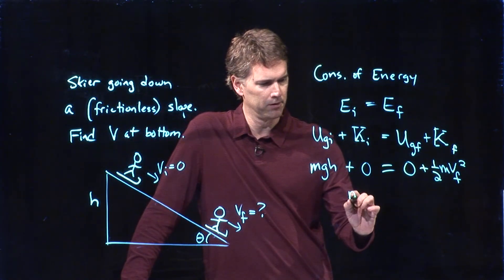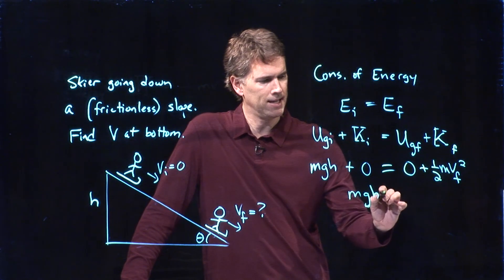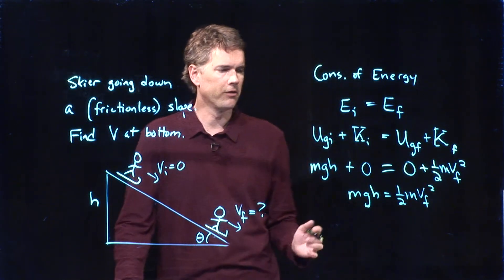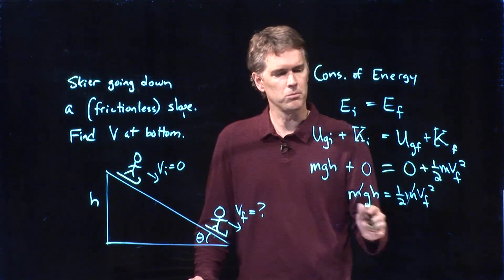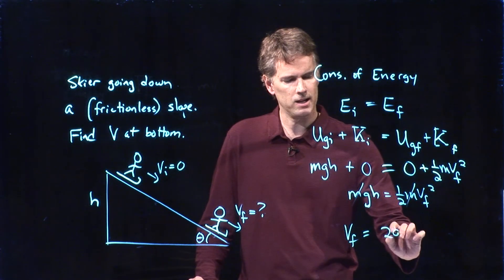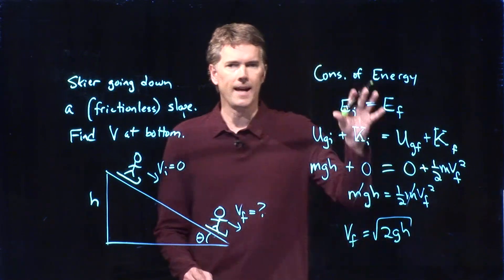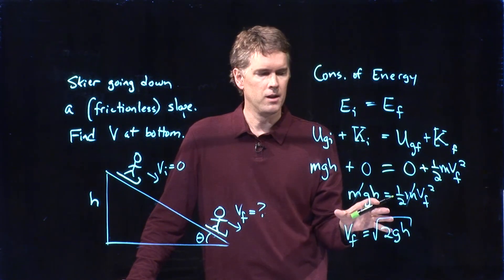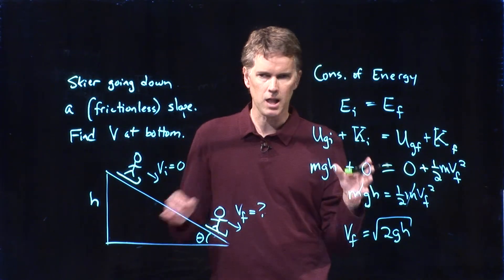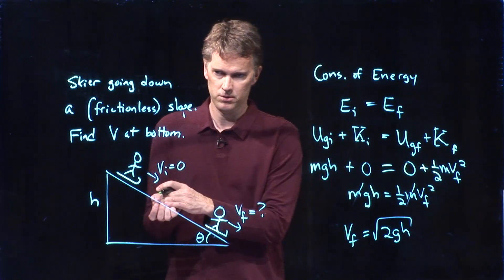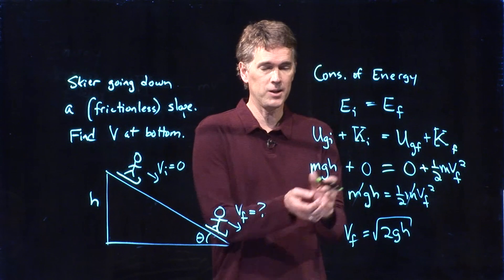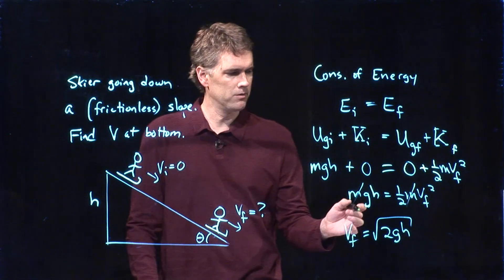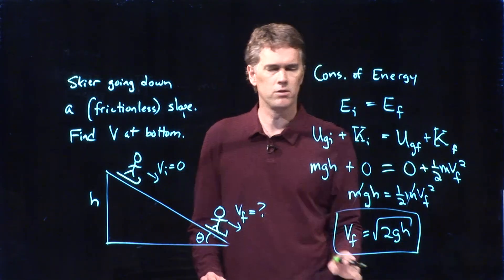And now look how simple this is. mgh equals 1⁄2 mvf squared. And you can solve this for vf. Cross out the m's, multiply by 2, take the square root. And you get exactly what we had before in a lot fewer steps. Okay? Just straightforward. This is the great thing about conservation of energy. A lot of problems that were difficult to do using the kinematic equations are suddenly really easy to do using conservation of energy.